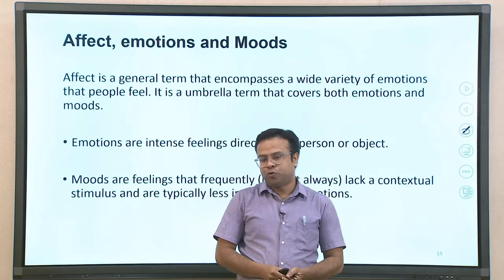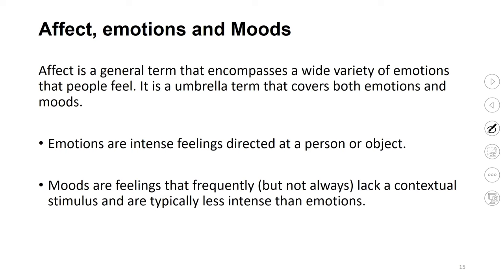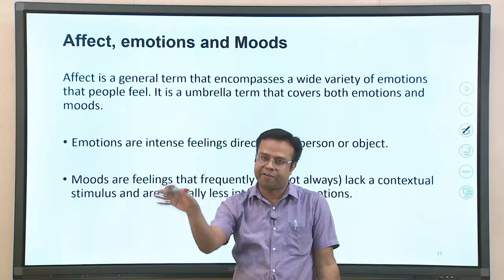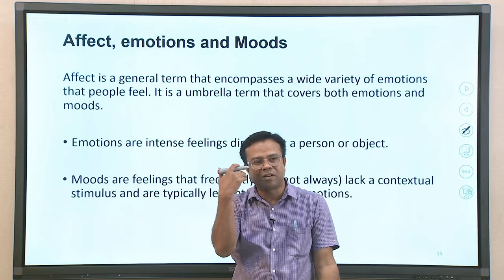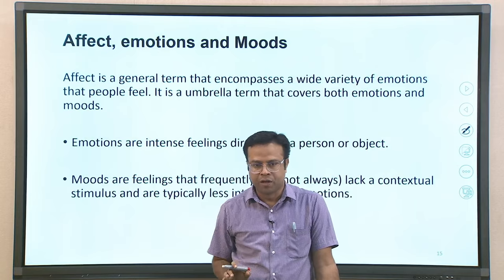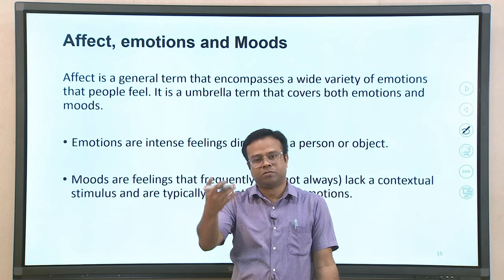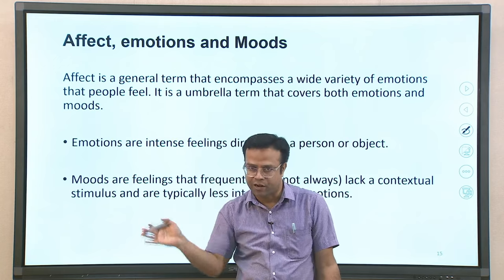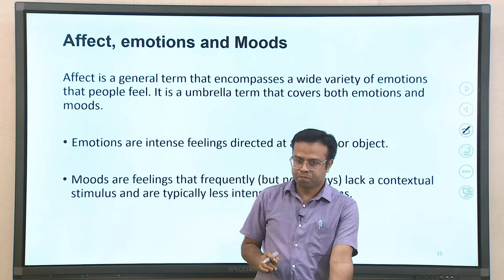Now let us come to the next concept, which is very important: the distinction between affect, emotions, and moods. Many times people use these terms interchangeably, but technically they are different in the field of psychology. Affect is a very general term that encompasses a wide variety of emotions that we feel. It is the broadest term used to connote emotions — an umbrella term which includes emotions, moods, and everything under it.